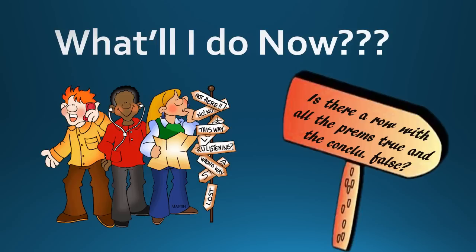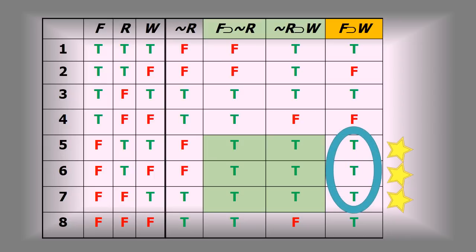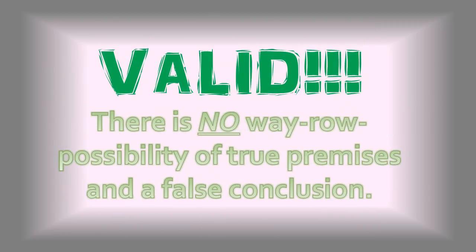We've done a column for every premise and the conclusion. Now we look for a row with all true premises and a false conclusion. In rows five, six, and seven, both premises turned out true. After starring those rows and looking at the conclusion column highlighted in yellow, we always got trues every time the premises were true. That means the argument is valid — there was no way for the premises to be true and the conclusion false. There is no row or possibility of true premises and a false conclusion. That is by definition a valid argument.